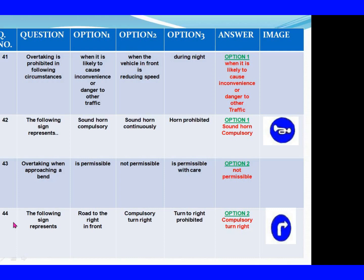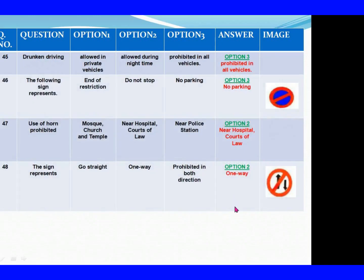Question 44: The following sign represents. Option 1: Road to the right narrowed. Option 2: Compulsory turn right. Option 3: Turn to right prohibited. The right answer is Option 2: Compulsory turn right. Question 45: Drunken driving. Option 1: Allowed in private vehicle. Option 2: Allowed during night time. Option 3: Prohibited in all vehicles. The right answer is Option 3: Prohibited in all vehicles.